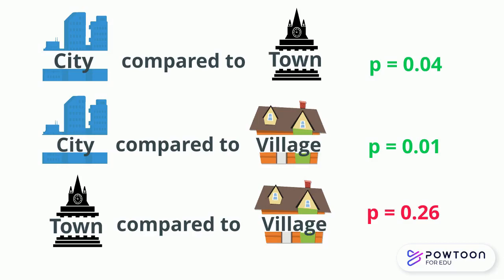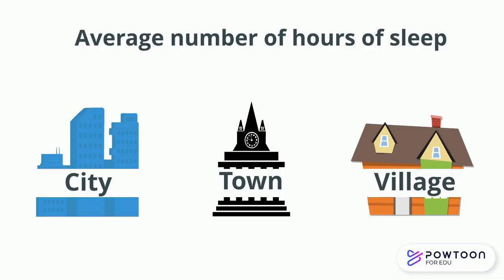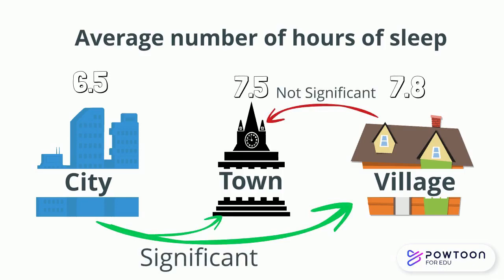We then need to look at the means for our categories to see which direction these differences are in. Here we see the average amount of sleep for people living in cities is 6.5 hours, for towns is 7.5 hours and for villages is 7.8 hours. So using the results of our post hoc test, we can say that people in cities sleep significantly less than those in towns and villages, but that while people sleep on average longer in villages than in towns, this is not a significant difference.